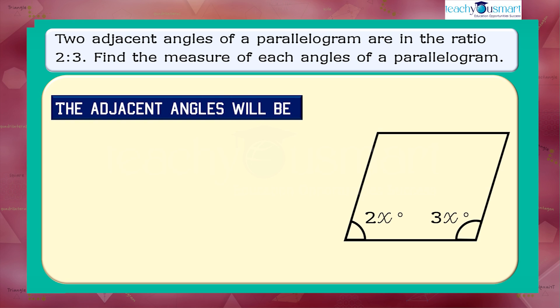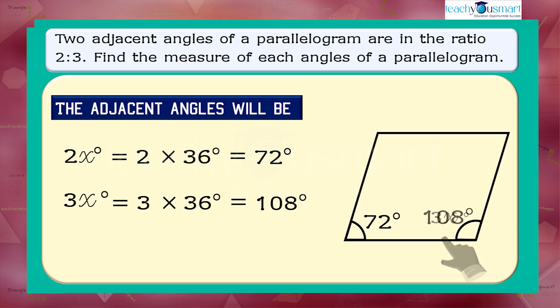So each adjacent angle will be 2x degrees equals 2 multiplied by 36 degrees equals 72 degrees, and 3x degrees equals 3 multiplied by 36 degrees equals 108 degrees.